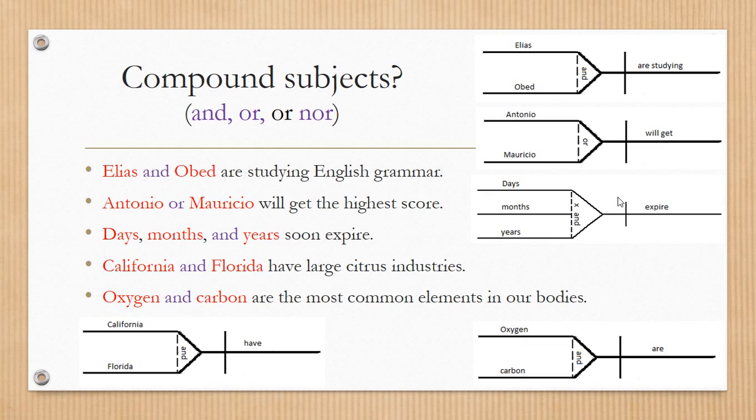and months. We could place an and there, but it's going to sound weird, saying days and months and years soon expire. So we say just days, X, months, down, and then and, years.